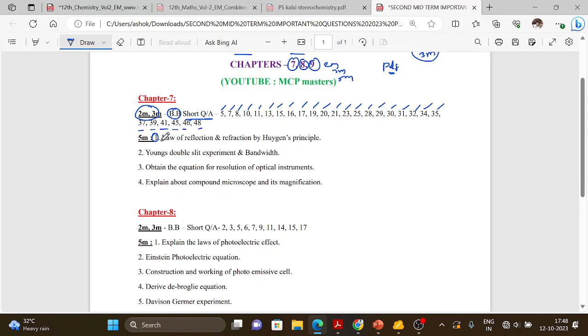For five mark questions, law of reflection and refraction by Huygens principle is very important. Young's double slit experiment and bandwidth - when they ask about Young's double slit experiment, you should derive bandwidth as well. Resolution of optical instruments and compound microscope with magnification are also important. Sometimes interference questions appear, so study that too.